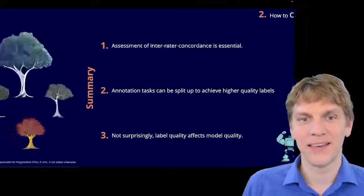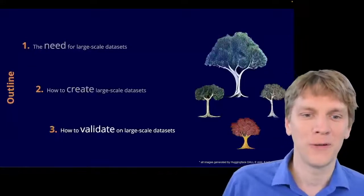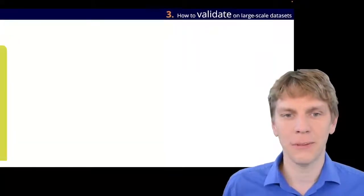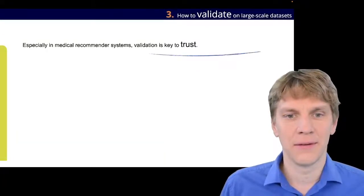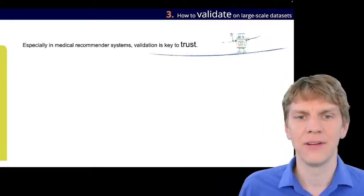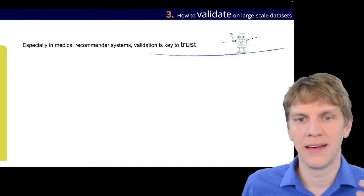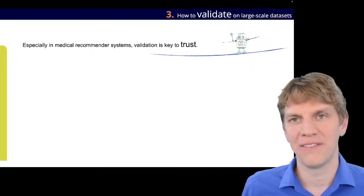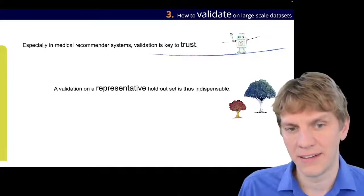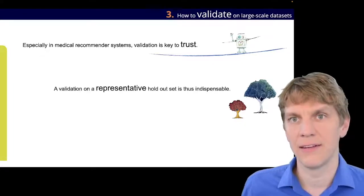Well, so that leads me to the third and final part of my presentation. How do we validate on those large-scale datasets? And coming to that, we have to state that, especially in medical recommender systems, validation is a key to trust, right? So, we need really a representative dataset, and without that, we cannot really validate our systems. So, as I said, the validation needs to be run on a representative holdout set, which is else indispensable.